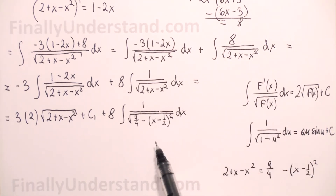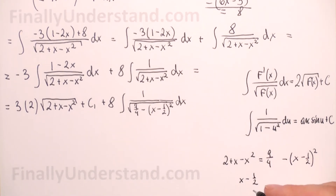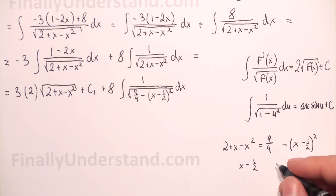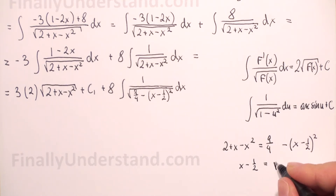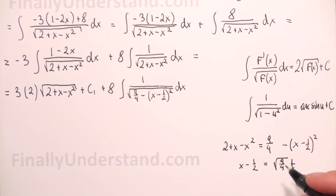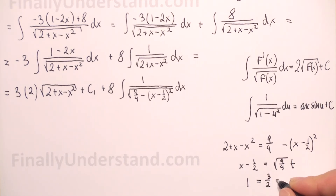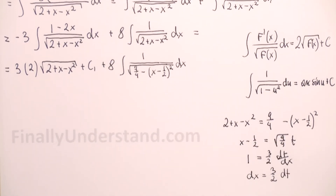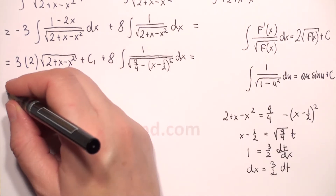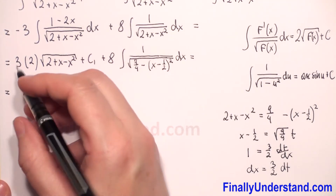We rewrite the square root as the square root of 9 over 4 minus (x minus one-half) squared. Now we substitute x minus one-half by the square root of 9 over 4 times t, so that we get the form 1 minus t squared. Taking the derivative of both sides: 1 equals 3 over 2 times dt/dx, so dx equals 3 over 2 dt.